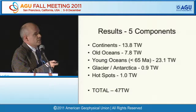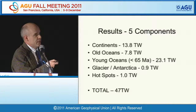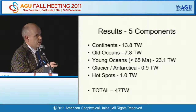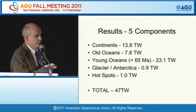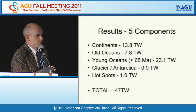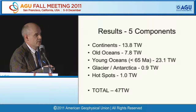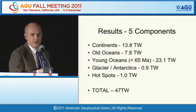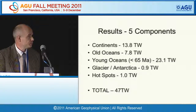Coming to the results—the five components: the continents yield just under 14 terawatts; the old oceans, 8 terawatts; the young oceans, 23 terawatts; Antarctica, 1 terawatt; and hotspots, 1 terawatt—rounding up to 47 terawatts.